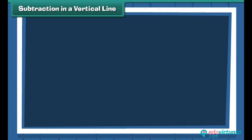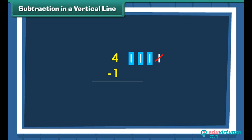Subtraction in a vertical line. Let us now subtract numbers vertically. Write the numbers one below the other. To subtract one from four, write four first, then write one below it. Draw four vertical lines next to four. Cross out one vertical line to subtract one. One, two, three — therefore, four minus one is three.